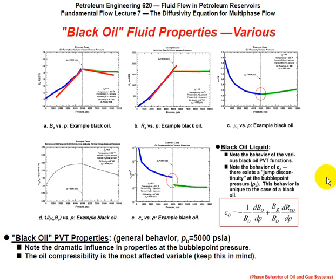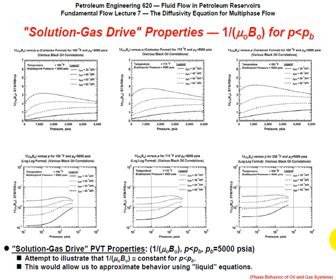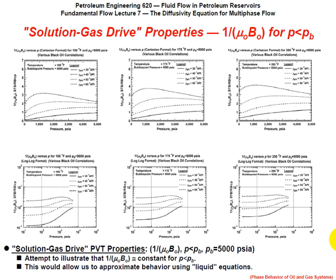If 1/(μO×BO) is constant, then we don't need pseudopressure. For the sake of argument, it's sort of constant, so we'll say that's alright.